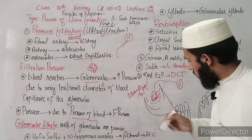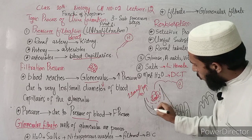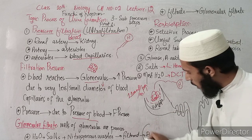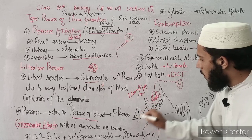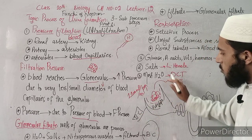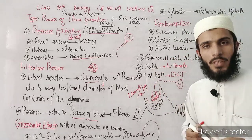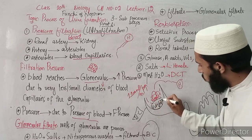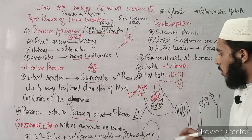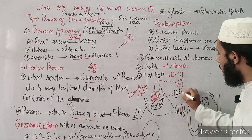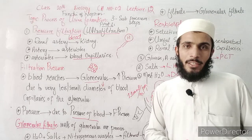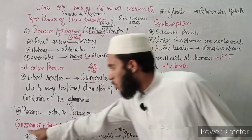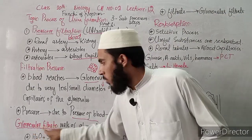Water, nitrogenous waste, and salts are filtered out. Blood cells and plasma proteins remain in the blood. The filtered fluid — water, nitrogenous waste, and salts — passes into the Bowman's capsule, which is a cup-like structure surrounding the glomerulus. This filtered fluid is called the filtrate.